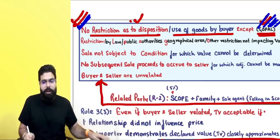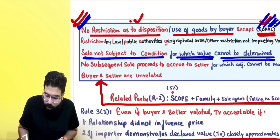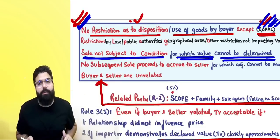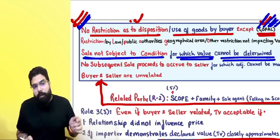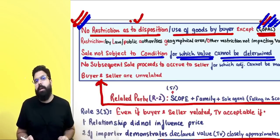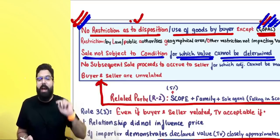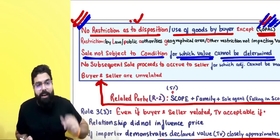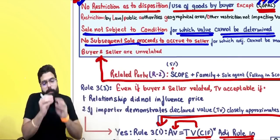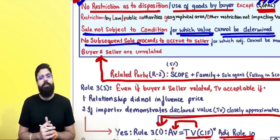The second condition is: the sale should not be subject to a condition for which value cannot be determined — it must be an unconditional sale. If any condition is attached to the sale, the officer will not accept it and will apply the valuation rule to ascertain the value.